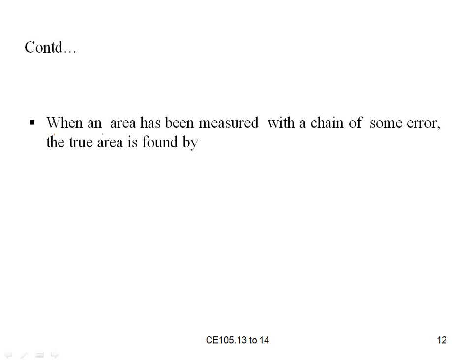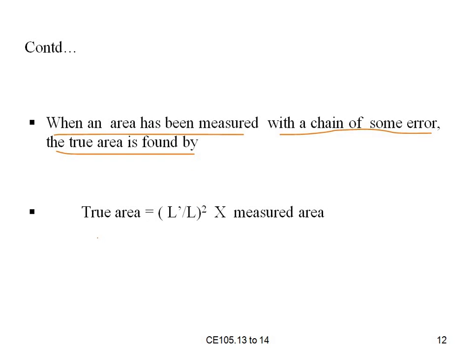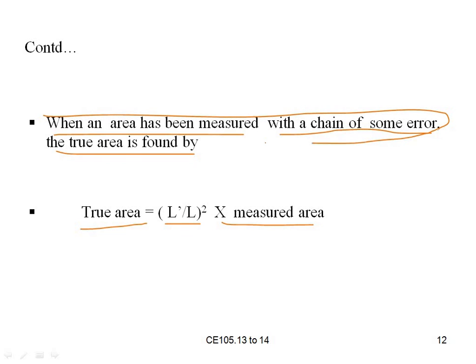When an area has been measured with a chain having some error, the true area is found by: True Area = (L' / L)² × Measured Area.